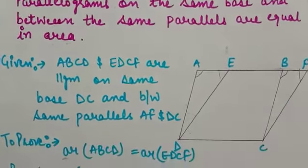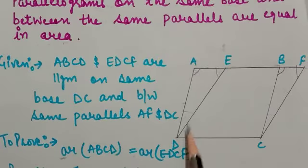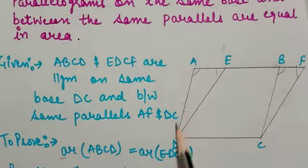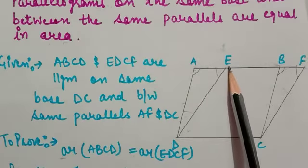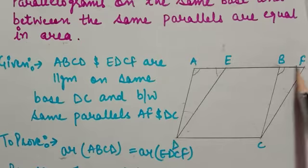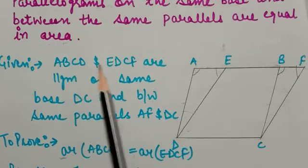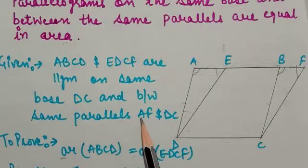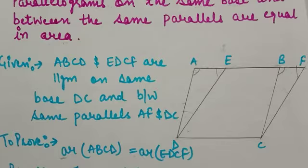First, we draw a diagram. We have one parallelogram ABCD and another parallelogram EDCF. So ABCD and EDCF are parallelograms on the same base DC, and between the same parallels AF and DC. If you know the condition, the two parallel lines share a common base.